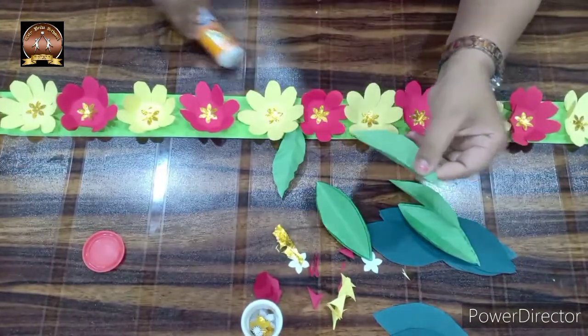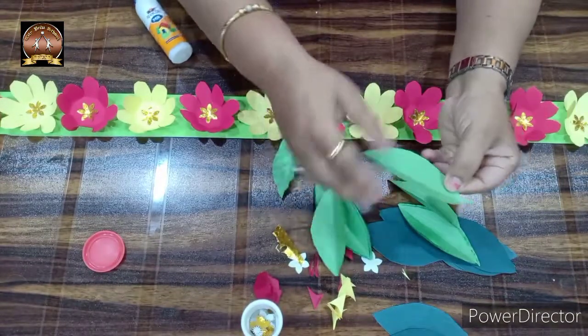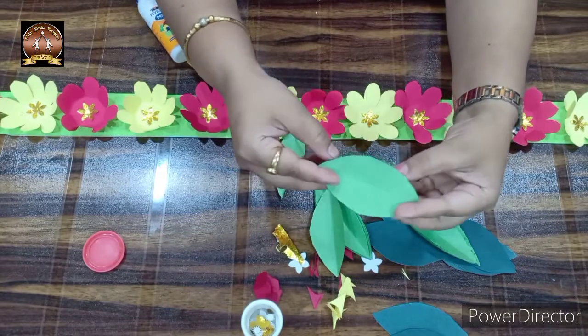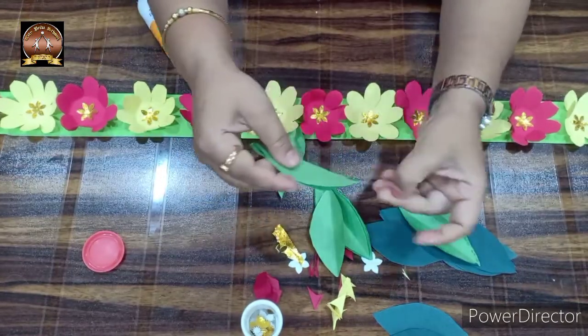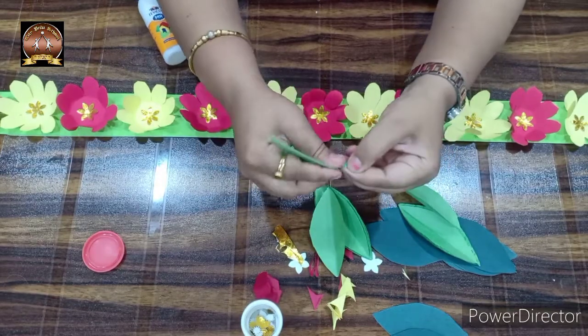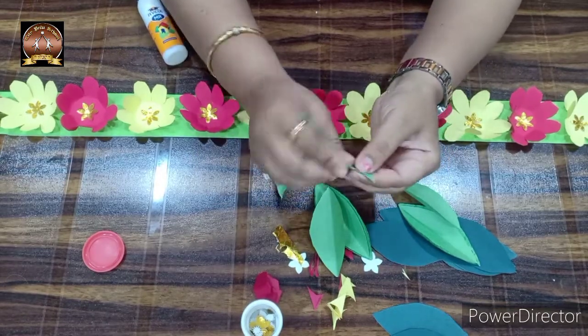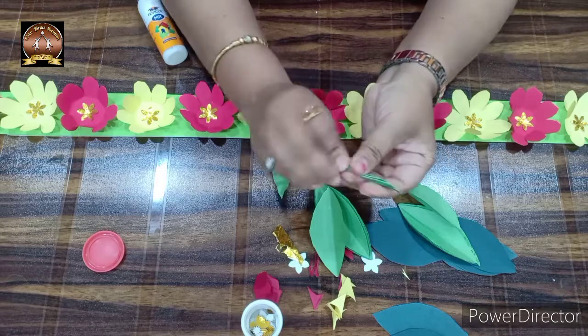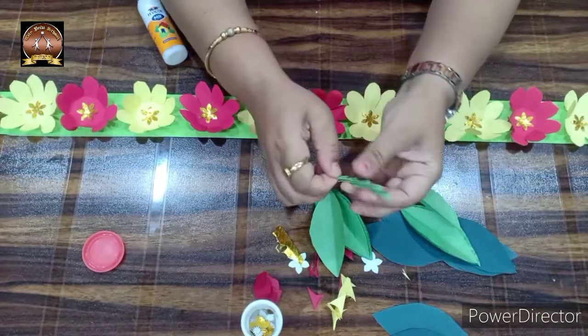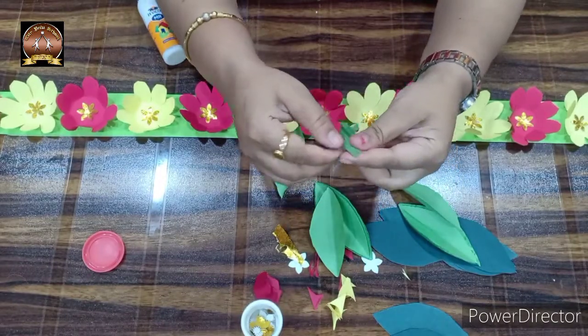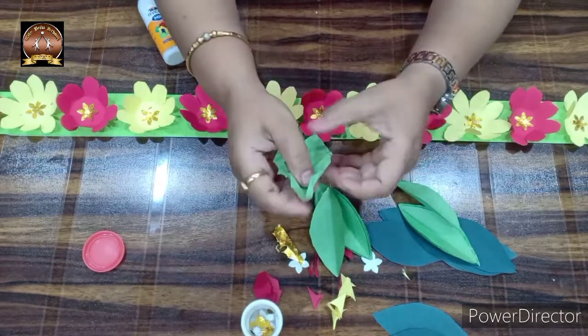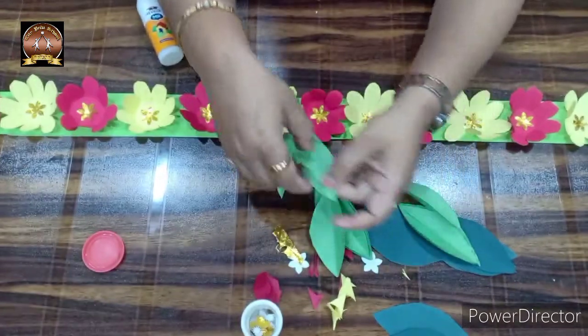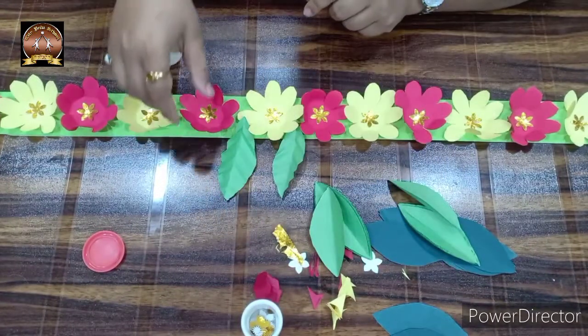Once again, I will show you how to make a mango leaf. First, take the cut-out of the leaf. Fold it in the middle. Then from this end, start doing the fan fold. Do the fan fold properly, then press it and open it. You will get a lovely mango leaf effect, and then stick it on the toran.